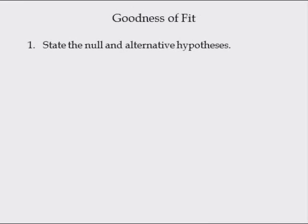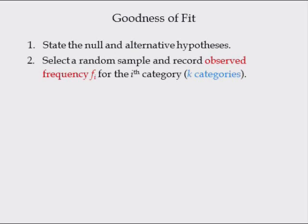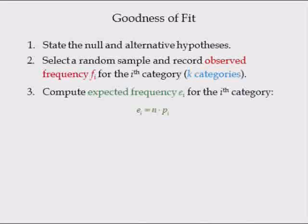For a goodness of fit test, state the null and alternative hypotheses. The null hypothesis is always of the form: the data follow the assumed distribution. Select a random sample and record the observed frequencies for k categories. Compute the expected frequency of the i-th category, which equals the sample size times the probability of category i.